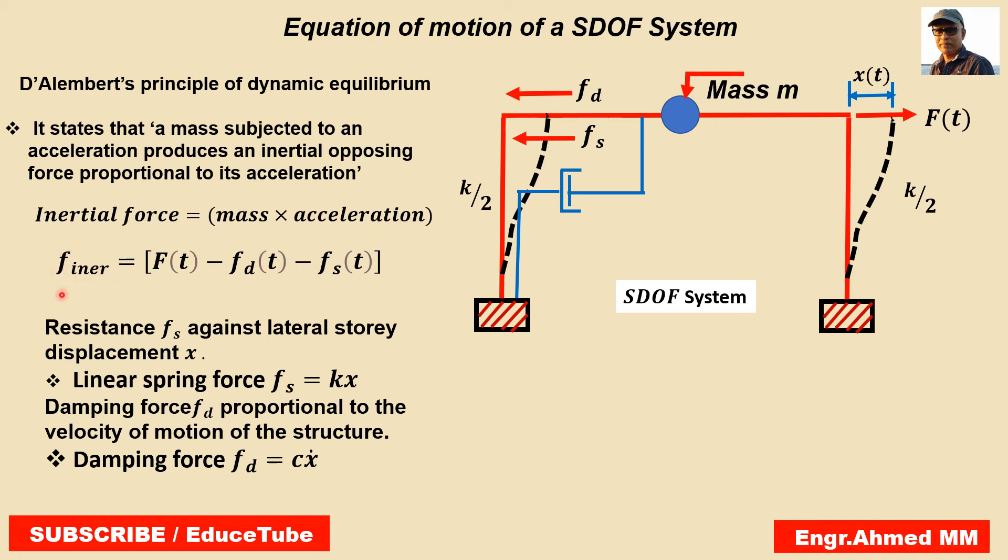We got Fs in terms of displacement, Fd in terms of velocity, and F inertia in terms of mass times acceleration. Surely we can write this equation rearranging, putting all the terms on the left hand side and the right hand side is Ft. We can write the whole equation as M x double dot, this is acceleration, C x single dot, this is velocity, and K times X, this is displacement, equals the external force. So we got the equation of motion of a single degree of freedom system.